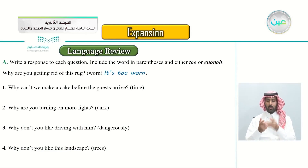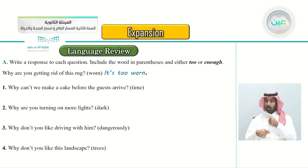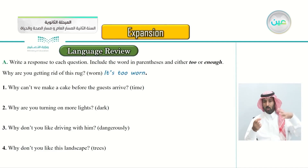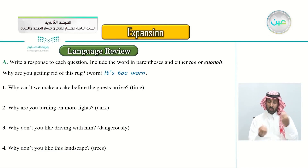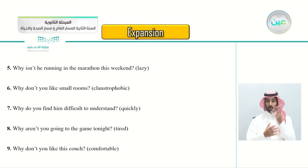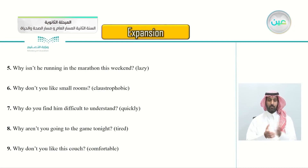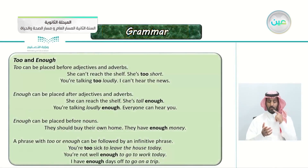We have: one, why can't we make a cake before the guests arrive? The word is 'time'. Two, why are you turning on more lights? The word is 'dark'. Three, why don't you like driving with him? The word is 'dangerously'. Four, why don't you like this landscape? The word is 'trees'. And we have continuing questions five through nine. But before we answer, let's revise the grammar of 'too' and 'enough'.